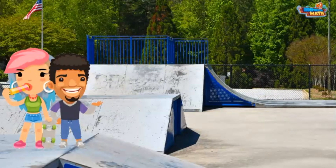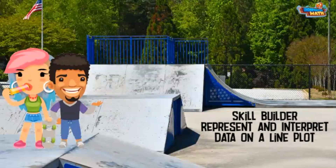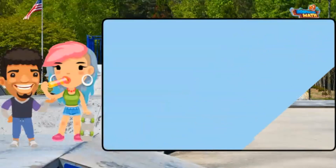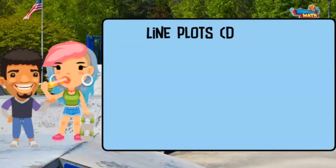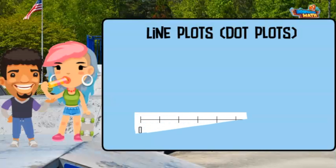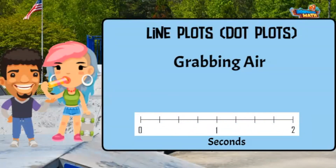Tony here to talk you through today's skill builder: representing and interpreting data on a line plot. Maeve is back too to help us along the way. Remember, a line plot, also called a dot plot, is a graph used to show information using a number line. The numbers are below the line, and data points — usually dots — are used to represent the information collected.